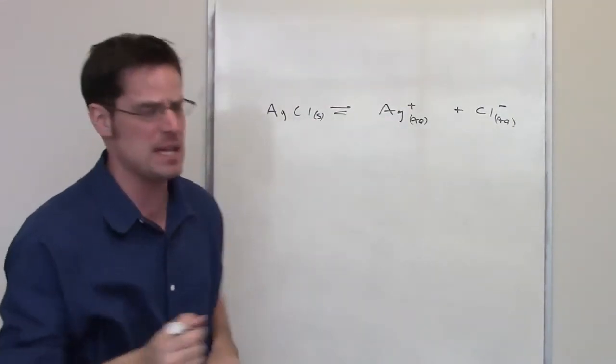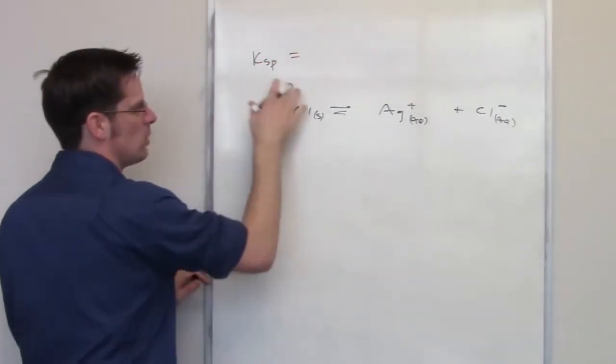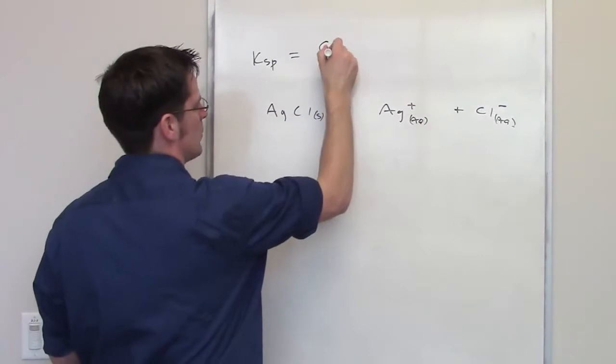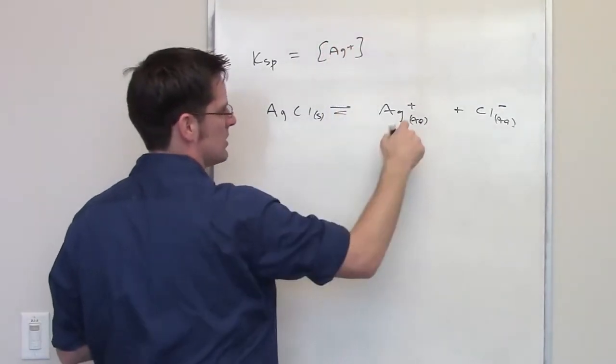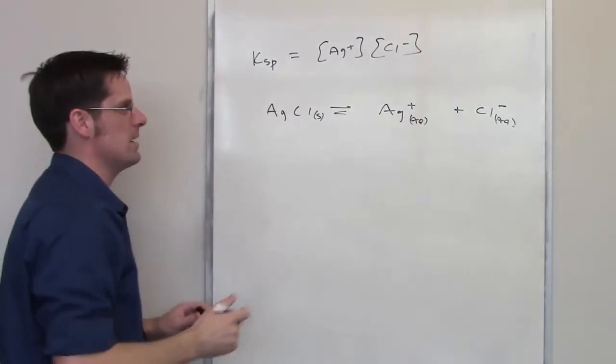It's not the same thing as Ksp. Ksp is the molar solubility product constant. Molar solubility product constant, in this case, is of course going to be equal to the individual concentrations of my silver cation multiplied by that of my chloride anion.